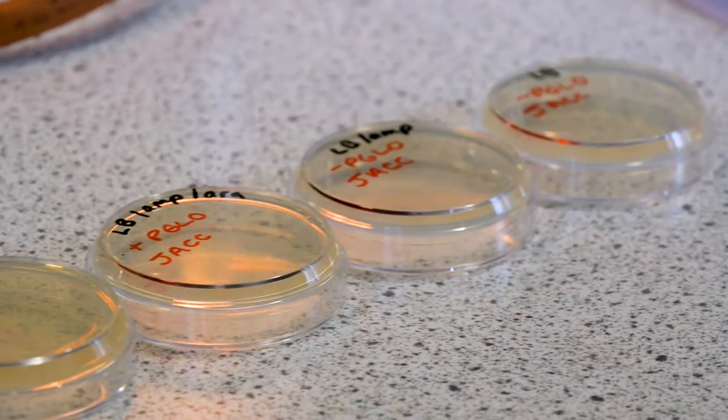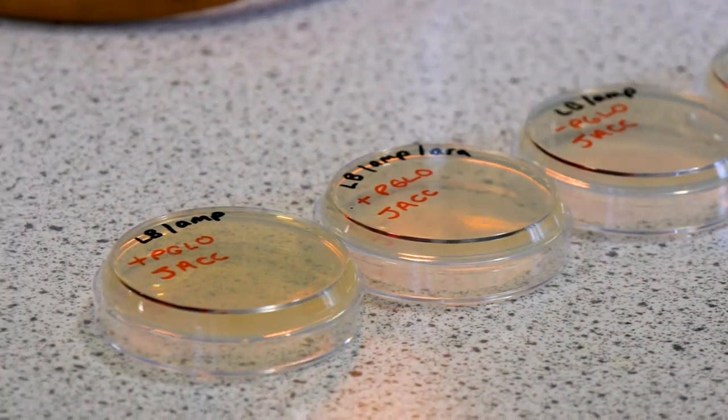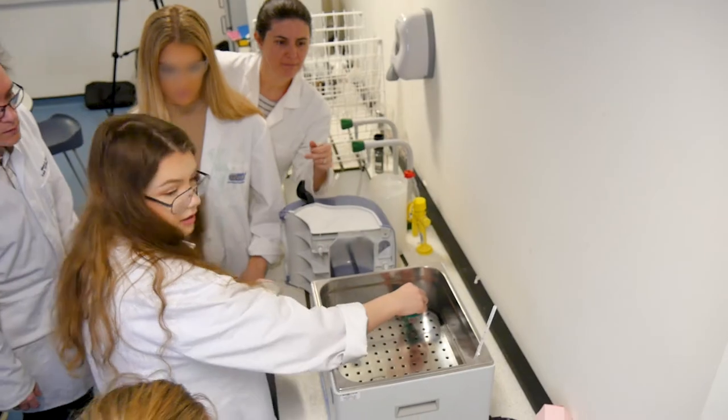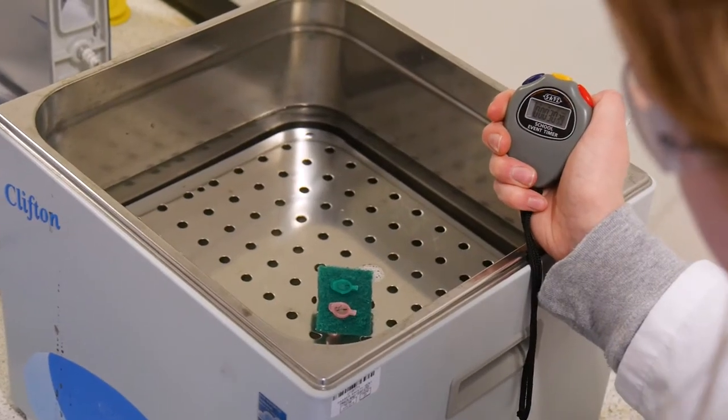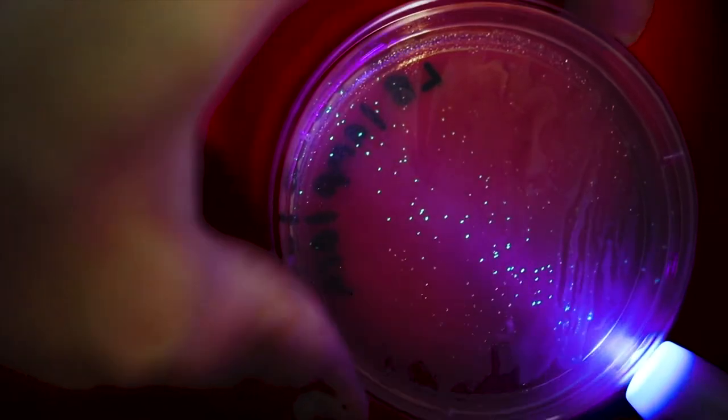Essentially the students cultured some E. coli bacteria which is really good at taking up these additional genes, and we were able to make them both antibiotic resistant. The whole point of the PGLO enzyme is for them to find out which bacteria will take up the antibiotic resistance gene.